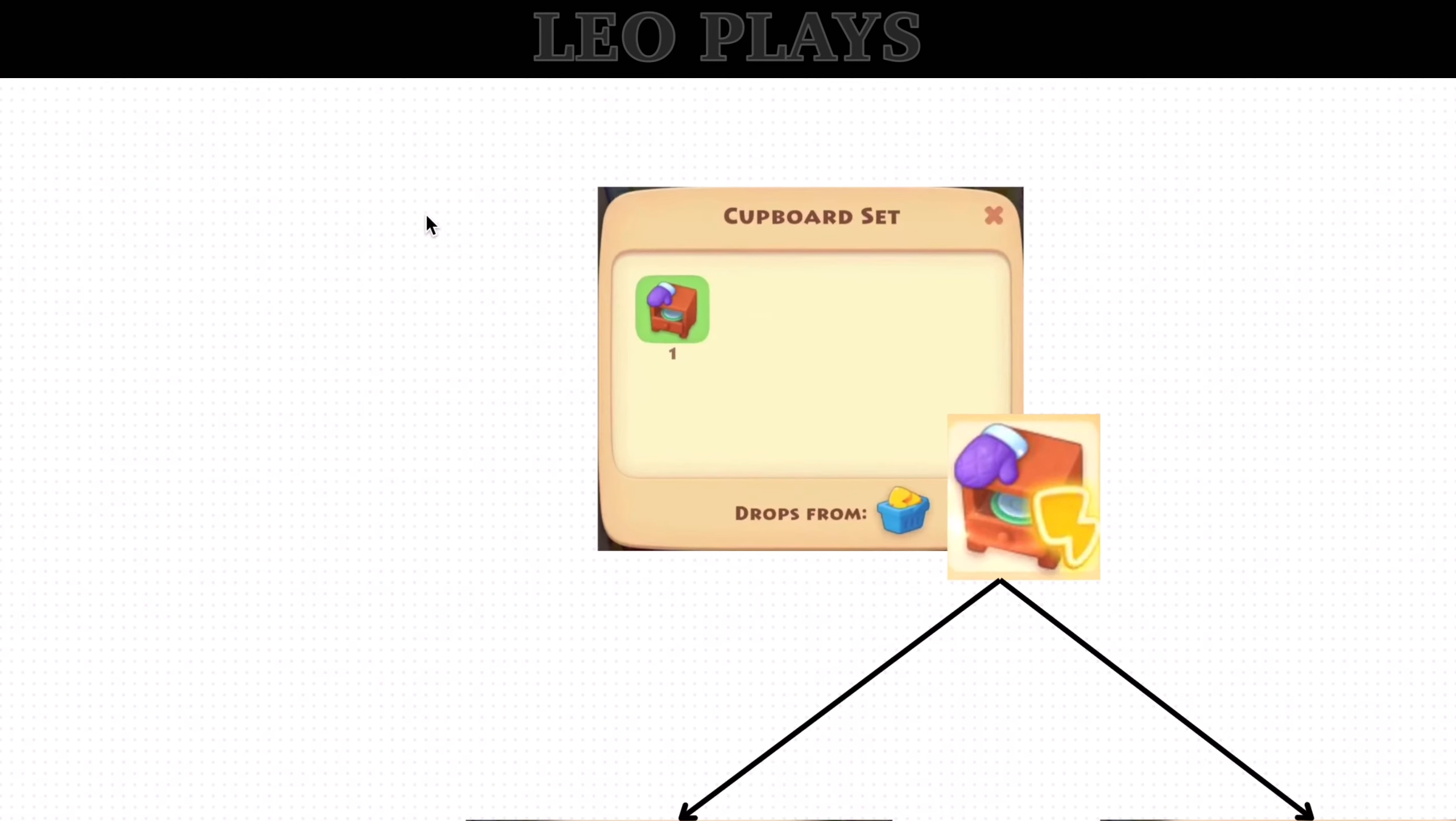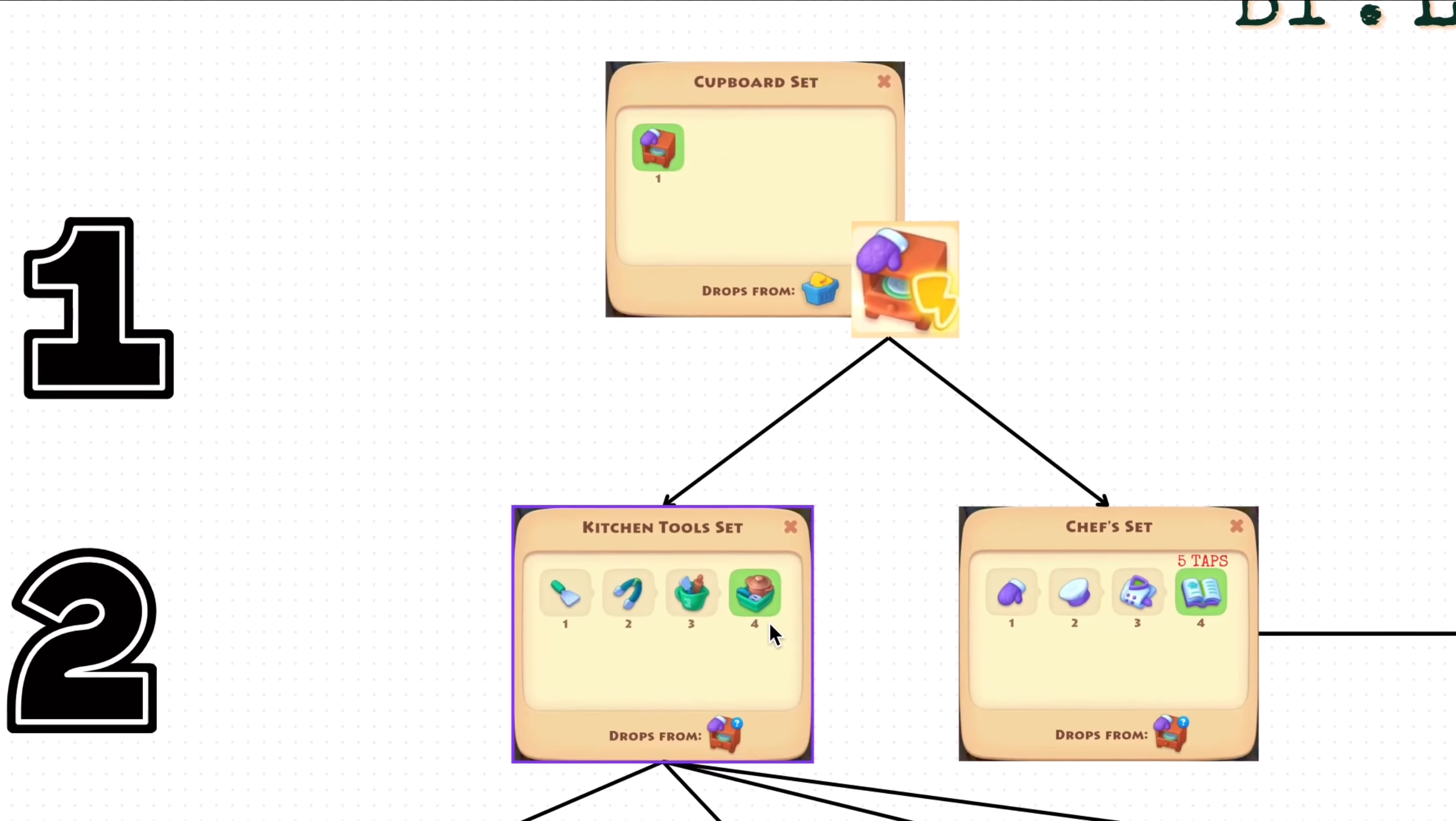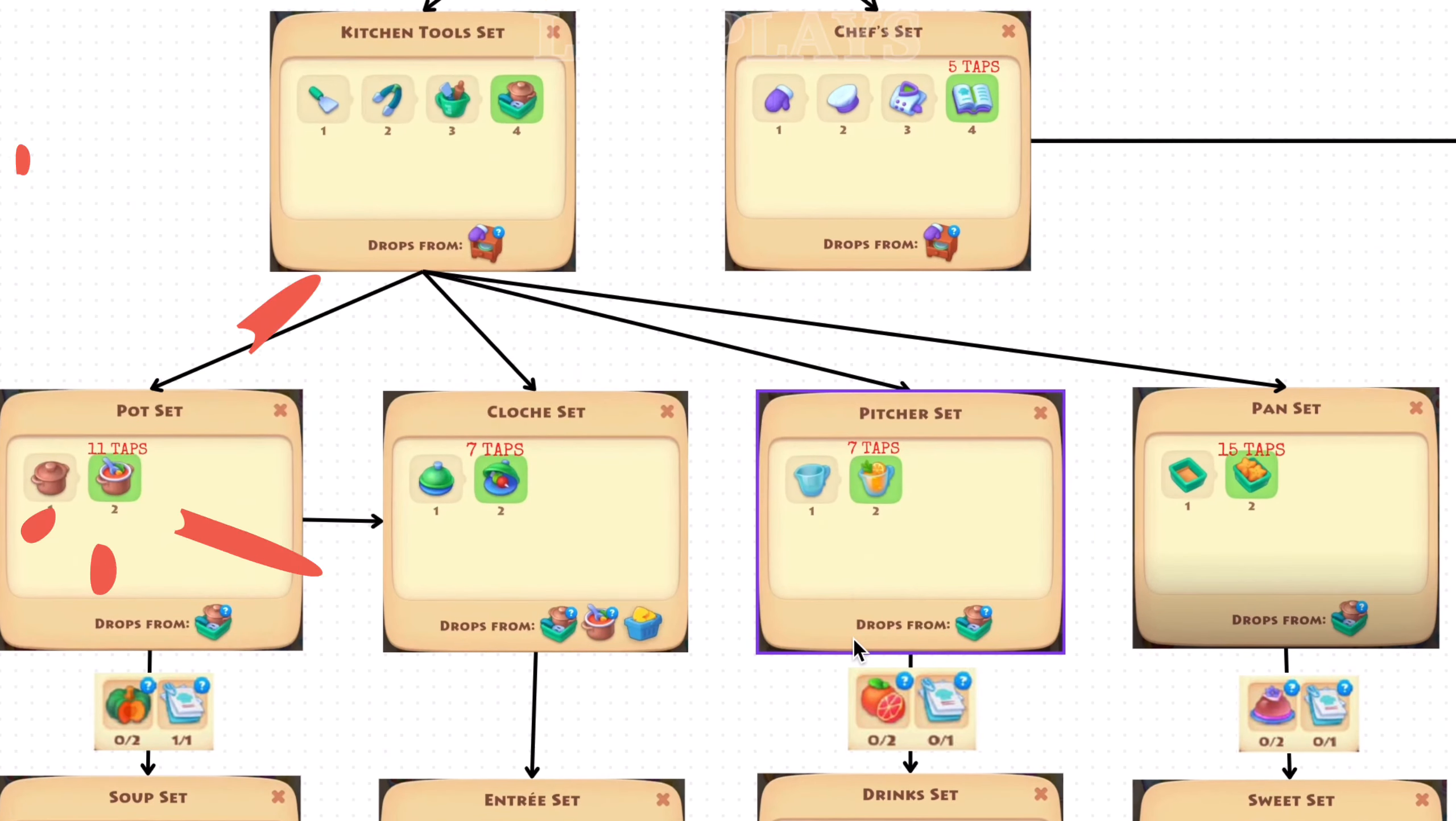Moving on, the cupboard set. Cupboard will make kitchen tools and chef set. Kitchen tools either make pot, couch, pitcher, or pan set.